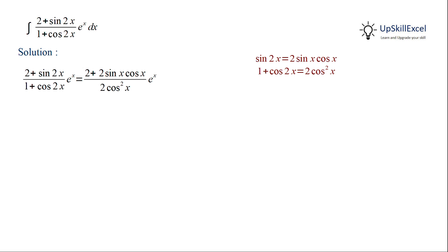Now we can take 2 common in the numerator, which gets cancelled with the 2 in the denominator. Then we can segregate the two terms. So we get the first term as 1 over cos square x, and in the second term we can cancel one of the cos x, giving us sin x over cos x.